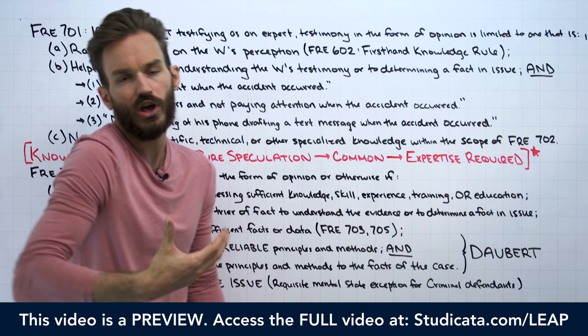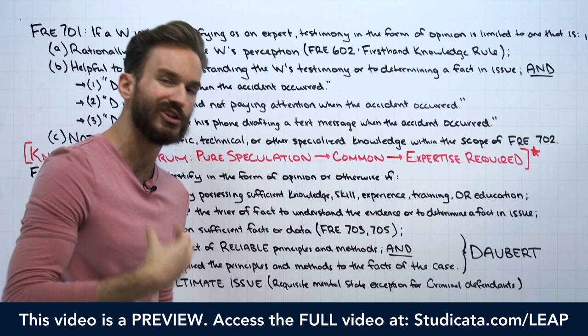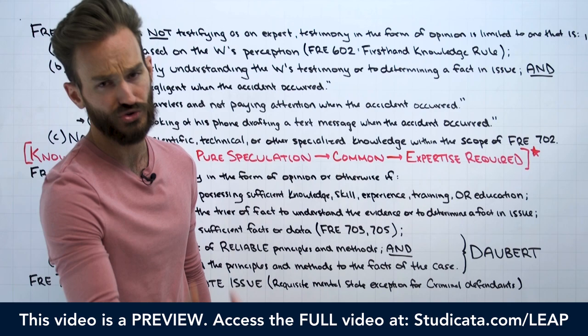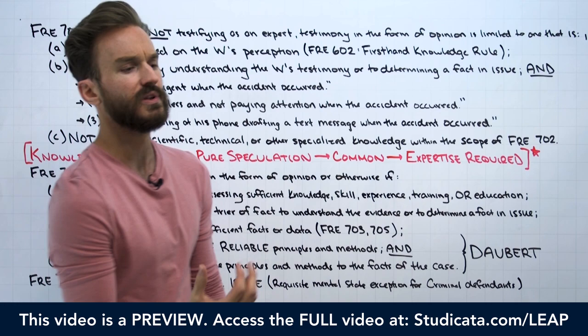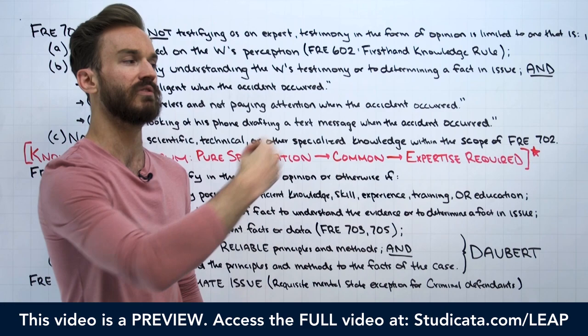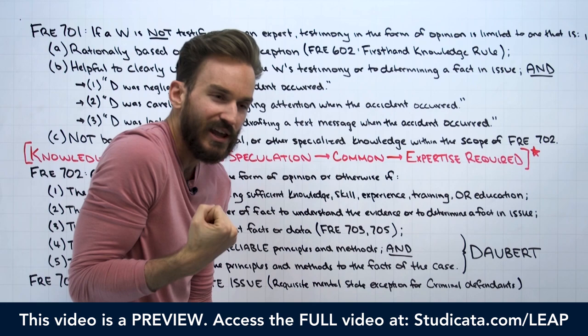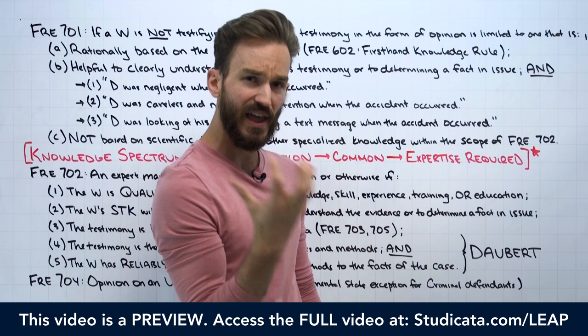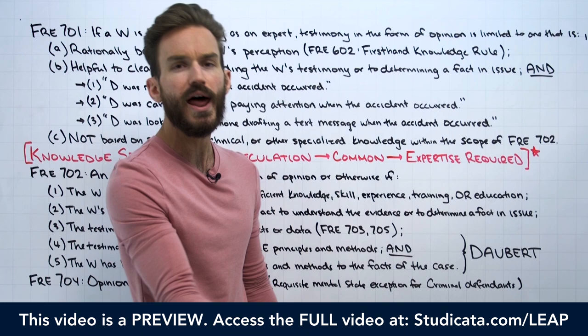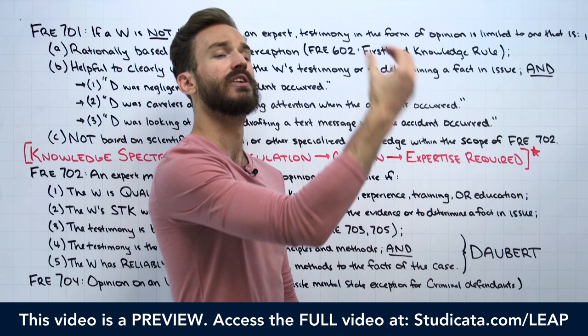You don't need any specialized knowledge, skill, training, or education to estimate how fast a car is traveling — that's common knowledge. Another good example is the general state or appearance of another person. It's not difficult to look at someone and say 'I think that person might be sick' if they have a blanket, look unwell, their face is red, they're sweating or coughing. They're exhibiting symptoms that everyone knows would indicate this person is likely ill.